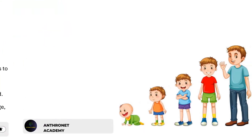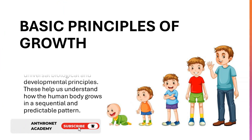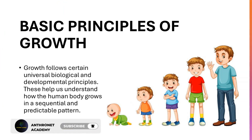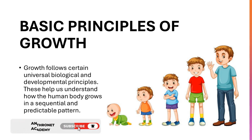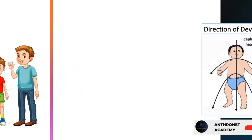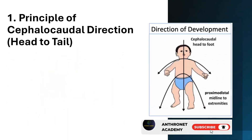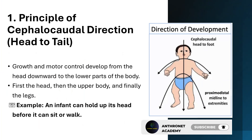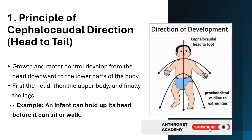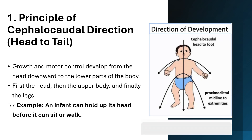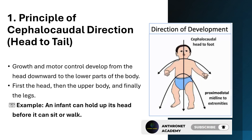Basic principles of growth: growth follows certain universal biological and developmental principles that help us understand how the human body grows in a sequential and predictable pattern. Principle 1 — Cephalocaudal direction (head to tail): growth and motor control develop from the head downward to the lower parts of the body — first the head, then the upper body, and finally the legs. Example: an infant can hold up its head before it can sit or walk.